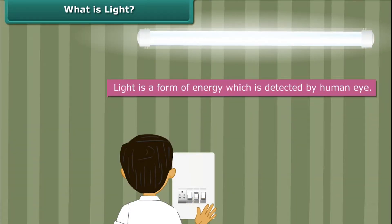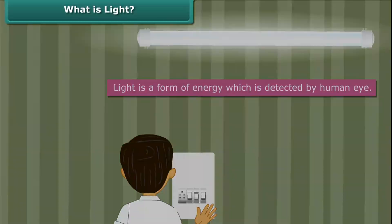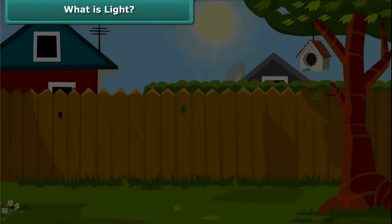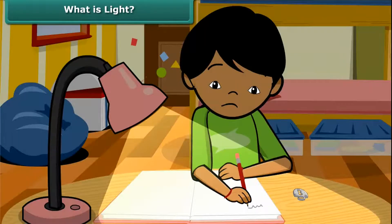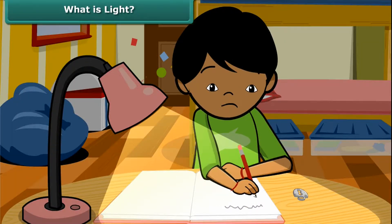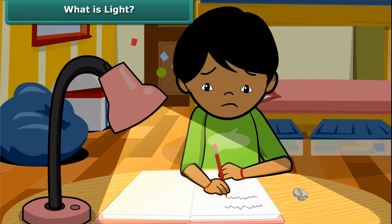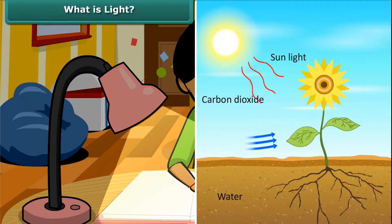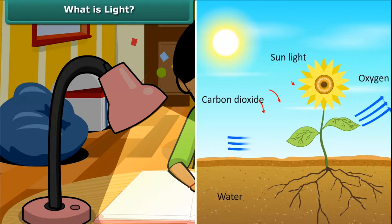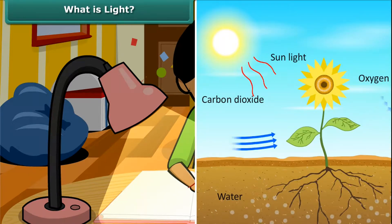Light is a form of energy which is detected by the human eye. It is everywhere around us. It not only helps us to see things, but it is also needed by plants to produce food for us.